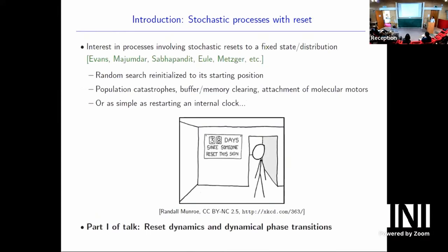Before finishing the introduction, we should say something about reset. There's been lots of interest over the past 10 years in processes where there's a stochastic reset to some fixed state or distribution of states. A paradigmatic example is search reinitialised to a starting position. But there are lots of other examples where reset pops up: population catastrophes, clearing of membranes, models of attachment of molecular motors. We can think of reset quite generally — it could be as simple as just resetting an internal clock and something which resets the dynamics.